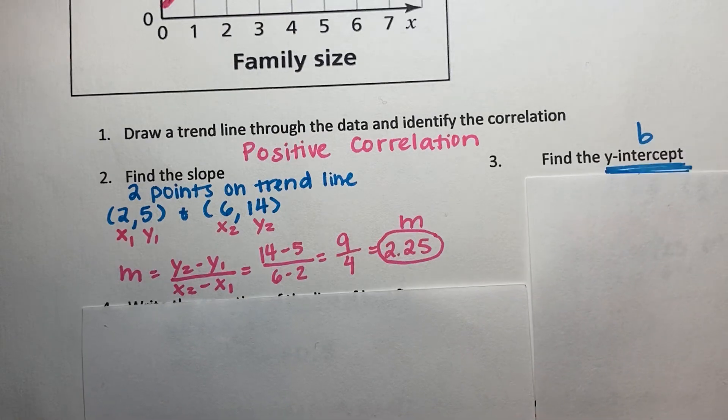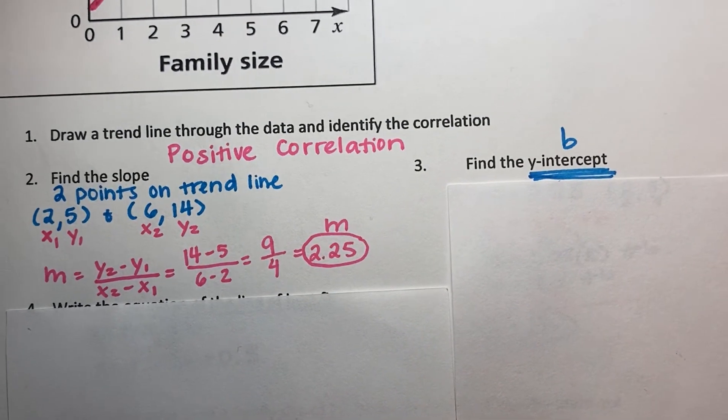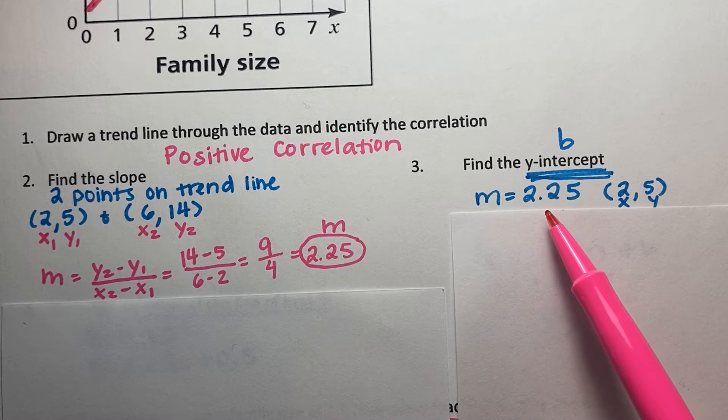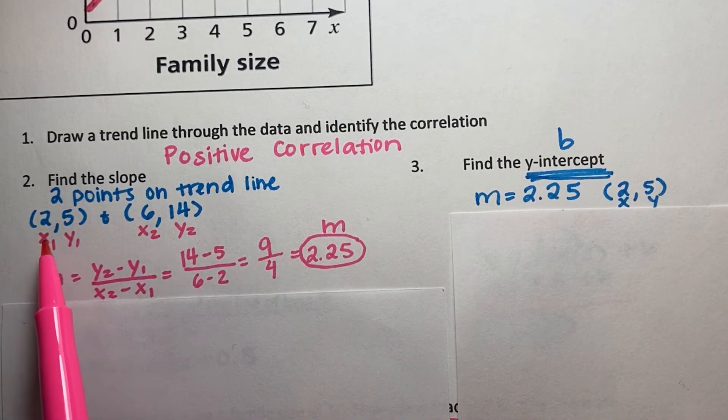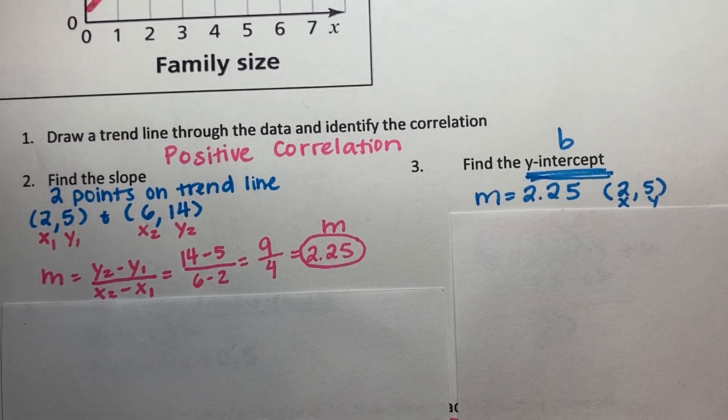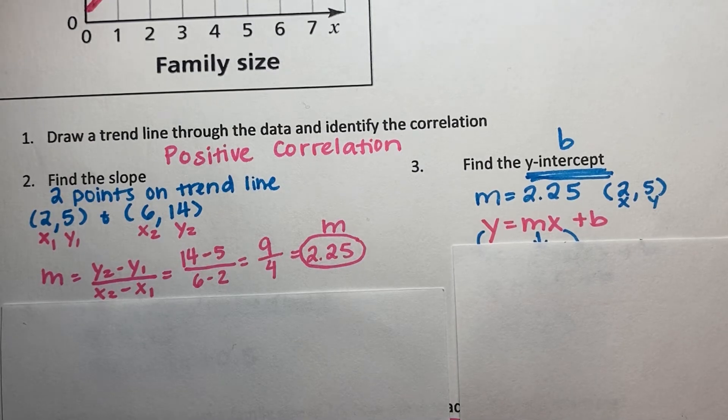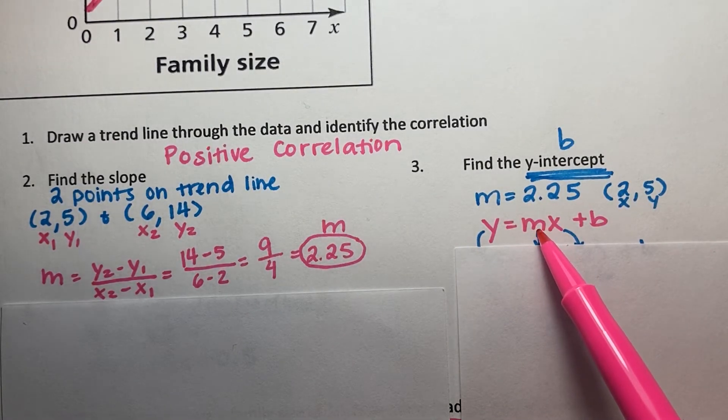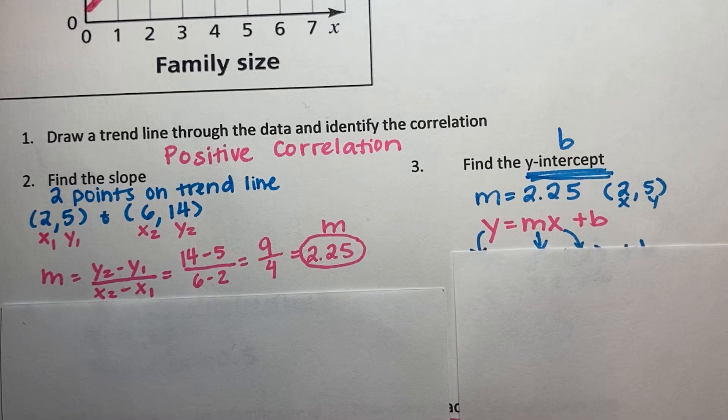The next question says that we're going to identify the y-intercept. When we identify the y-intercept, it is the same process as we've done before. We can either quickly see that we have found the slope, m, and we have a point from our trend line, 2 comma 5. So you can use point-slope or you can plug this into slope-intercept form to find b, the y-intercept. So when I plug this into slope-intercept form, I'm going to replace y with 5 for my point, m with 2.5, x with 2. And then I'm going to solve for b.